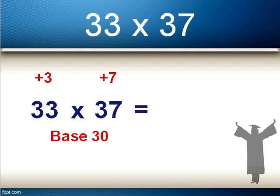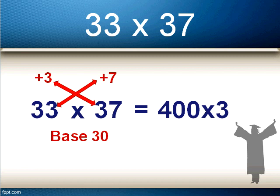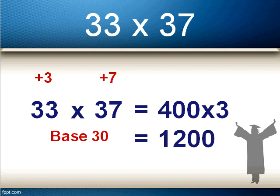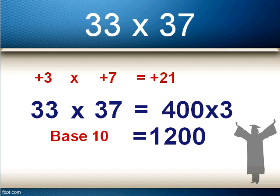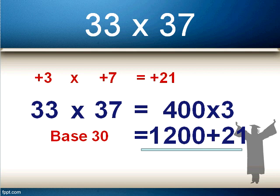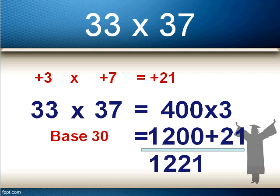The first step: add the 3 to 37, giving 40, or add 7 to 33, also giving 40. We think of it as 400, and because we're using base 30 it's 400 times 3. Base 10 multiplies by 1, base 20 by 2, base 30 by 3 — so we get 1200. The second step: multiply the two red numbers — 3 times 7 is 21 — and add that to 1200: 1200 plus 21 equals 1221.